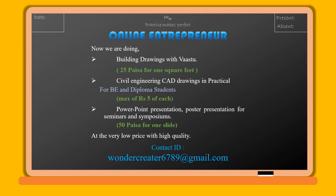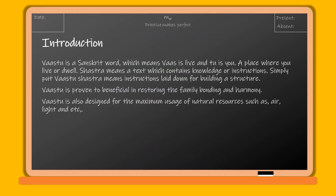Vastu is a Sanskrit word which means a place where you live or dwell. Shastra means a text which contains knowledge or instructions. Simply put, Vastu Shastra means instructions laid down for building a structure.